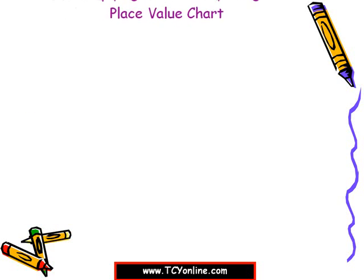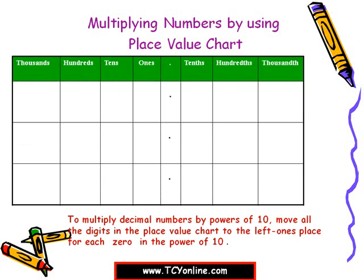Now let's see how to multiply numbers using a place value chart. Always remember, while multiplying any decimal number by a power of 10, move all the digits in the place value chart to the left — one place for each zero in the power of 10. For example, multiplying 62.5 by 10: move each digit one place to the left. 6 at tens moves to hundreds, 2 at ones moves to tens, and 5 at tenths moves to ones. We get the answer 625.